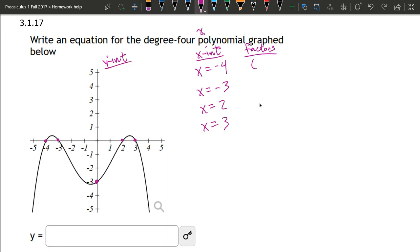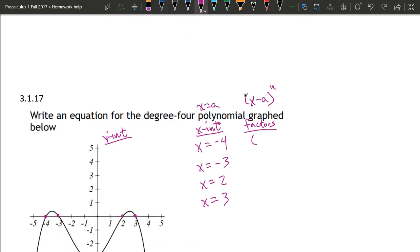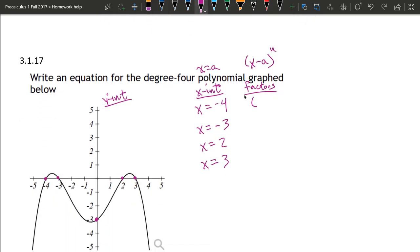Your x-intercepts are always going to be x equals a number. I'll just use the number a. And the factor looks like x minus a. And it could be raised to the n power, like that.